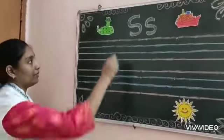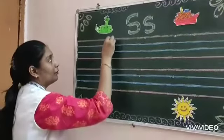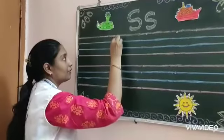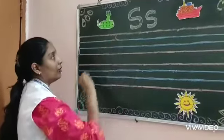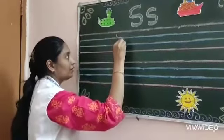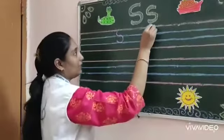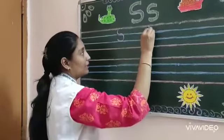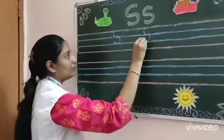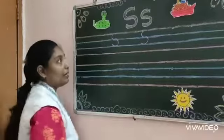Come, let us write the letter Mama S. On the red line, you will make a curve. Now again, we will make a curve. This is Mama S.